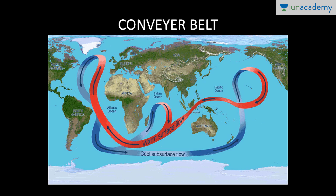This diagram shows the conveyor belt. The red one represents the warm ocean current that moves from the equator towards the poles, and the blue one represents the cold ocean current that moves from the poles towards the equator. This is how the global conveyor belt is formed.